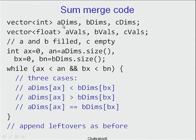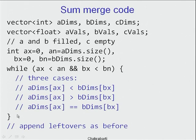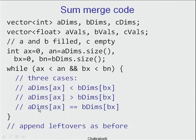The code for the sum merge: given A dims, A vals, B dims, B vals, with C initially empty. Set Ax = 0, Bx = 0 with last positions An and Bn. Three cases: if A_dims[Ax] < B_dims[Bx], push_back A_dims[Ax] and A_vals[Ax] to C, then advance Ax. If A_dims[Ax] > B_dims[Bx], push_back B_dims[Bx] and B_vals[Bx] to C, advance Bx. If equal, compute new_val = A_vals[Ax] + B_vals[Bx], and if non-negligible, push to C; advance both Ax and Bx.